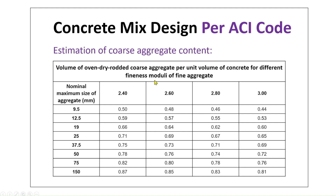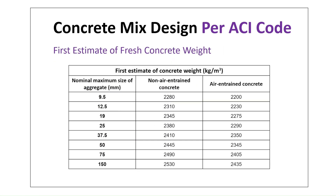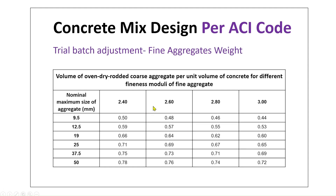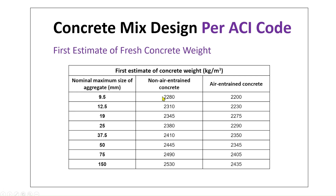The estimation of coarse aggregate content is based on oven-dry volume. From the table, for a maximum aggregate size of 19 mm and fineness modulus of sand of 2.6, the ratio is 0.64. For the first estimate of fresh concrete unit weight, with maximum aggregate size of 19 mm for non-air-entrained concrete, the estimated value is approximately 2345 kg per cubic meter.